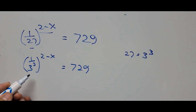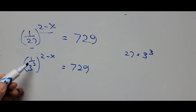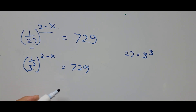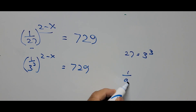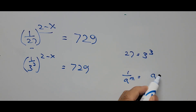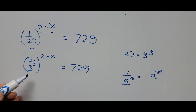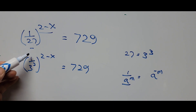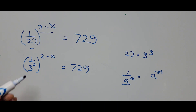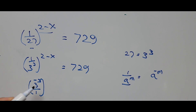From here, I'm going to find the reciprocal of 1 over 3 raised to the third power. We use the exponent rule: 1 divided by a raised to m equals a raised to negative m. So the denominator 3 raised to the third power is transposed to the numerator. This becomes 3 raised to negative 3, raised to the power 2 minus x, equals 729.